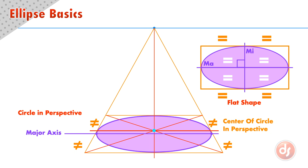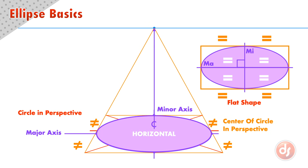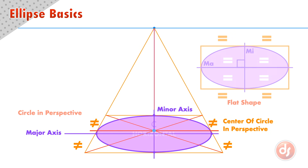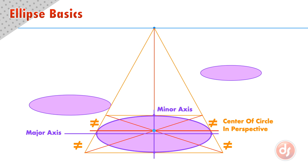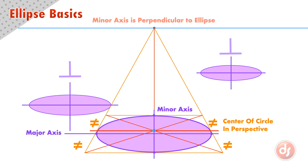We can create the minor axis by drawing a right angle to the major axis, going through the widest points of the short side. This will divide the ellipse into four equal quadrants. In this example, the minor axis lines up with the vanishing point, because the ellipse is horizontal and centered on the vanishing point. If we place another horizontal ellipse somewhere else in the scene, the major axis will be a horizontal line, meaning the minor axis remains vertical.